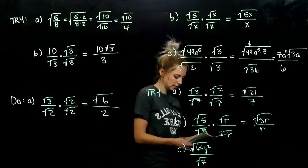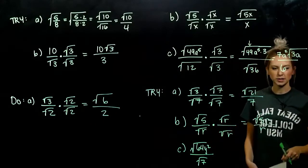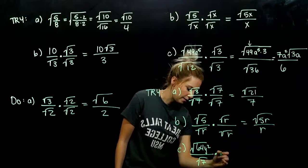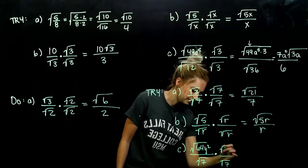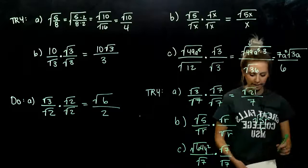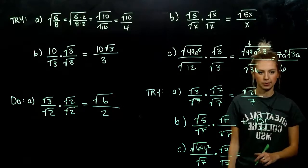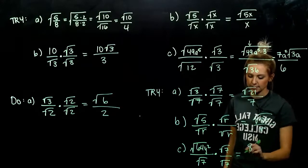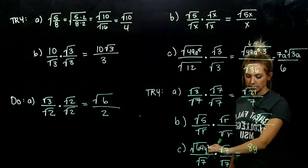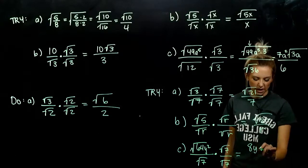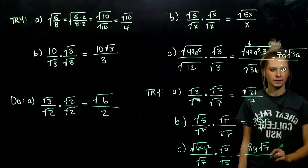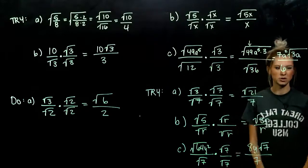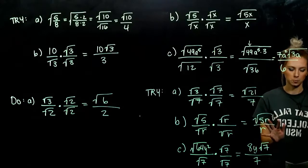Part C, the very last: the smallest perfect square we can work with using 7 is 49. So we just need to multiply by root 7 over root 7. Multiplying straight across the top — this is already a perfect square — 8 times 8 gives 64, y times y gives y squared, and root 7 doesn't evaluate so he's left over. Down below, root 7 times root 7 gives 7. We should check: can we cancel any of those? No — we're done.